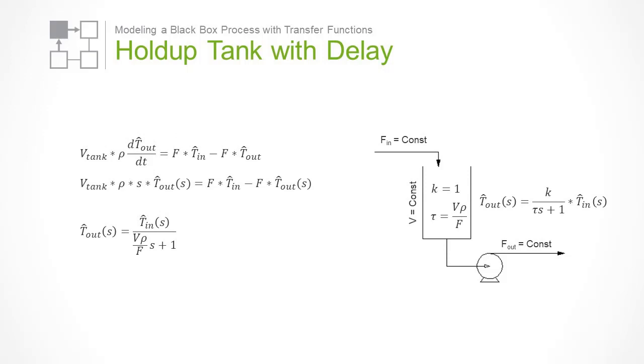Taking the Laplace transform tells us that the outlet temperature, Ts, equals K over tau S plus 1, times the inlet temperature, where K is 1, and tau is the amount of material in the tank divided by the flow rate of the inlet and outlet streams. Remember that these variables are in the Laplace domain, and still need to be converted to the time domain.